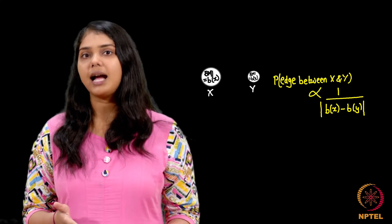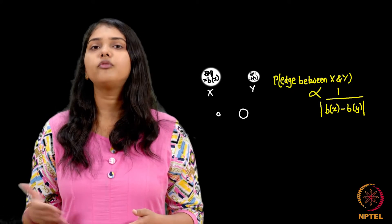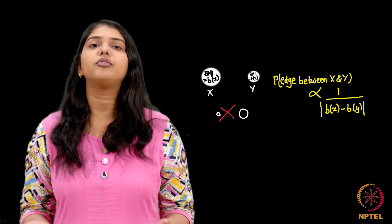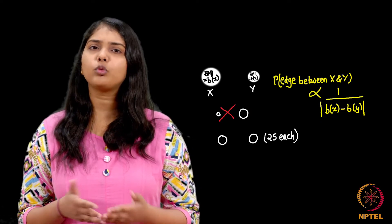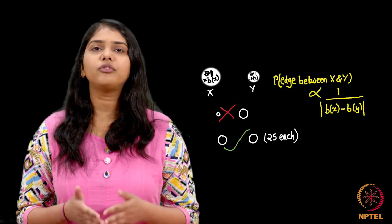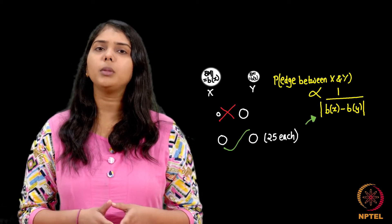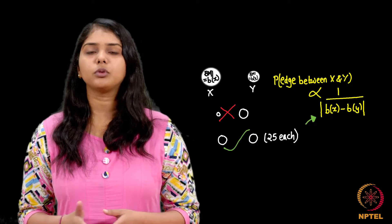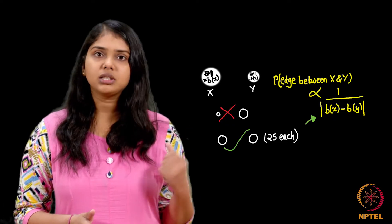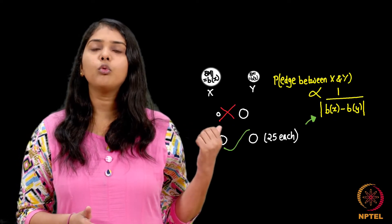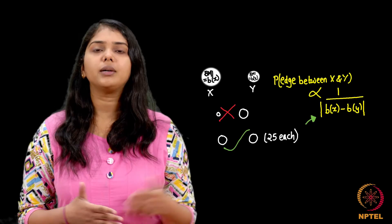For example, if a person is underweight with a BMI of 15 and another is overweight with a BMI of 40, it is very unlikely they will become friends. But if two people have almost the same BMI — say 25 each — they are likely to become friends. We use the formula: probability of an edge between U and V is proportional to 1 divided by the absolute difference between their BMIs, using absolute value to avoid negatives.